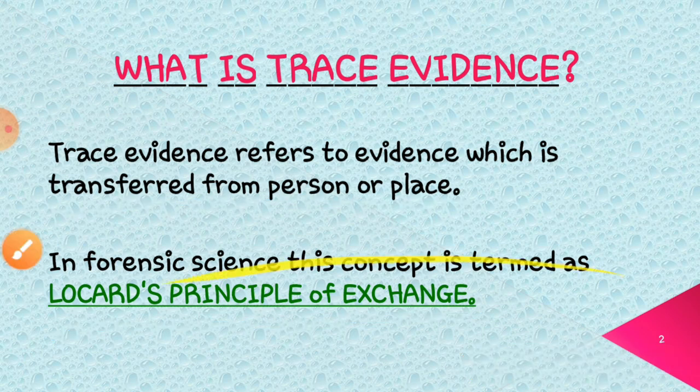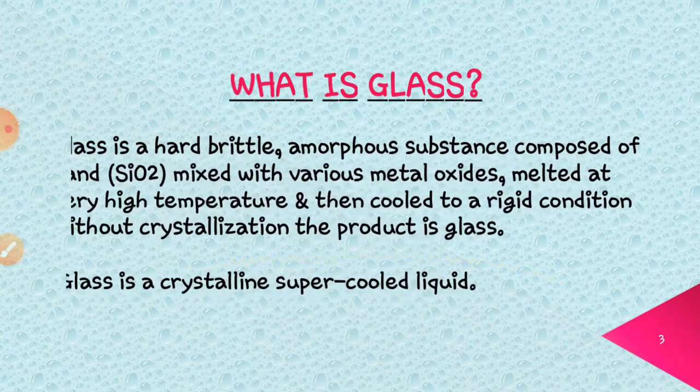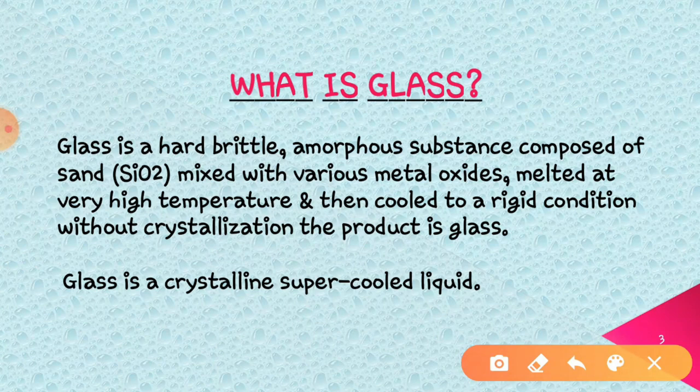Now let us move to the next slide. Here is what is glass. Basically, glass is a hard, brittle and amorphous substance, which is composed of sand mixed with various metal oxides, melted at very high temperature and then cooled to a rigid condition without crystallization. The product is termed as glass.